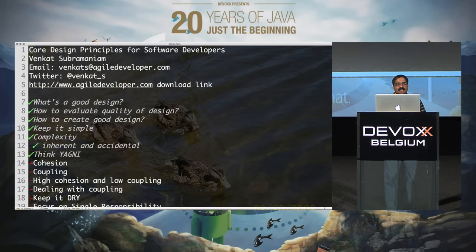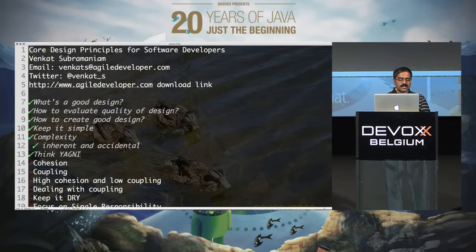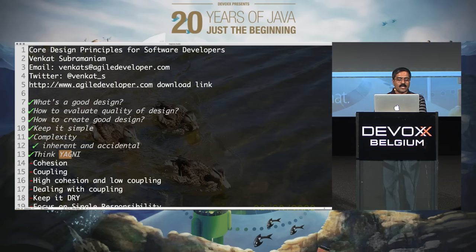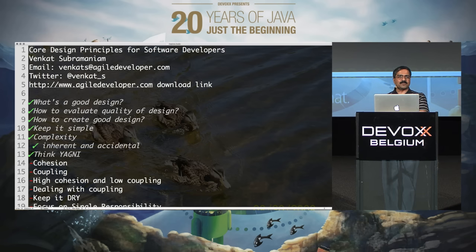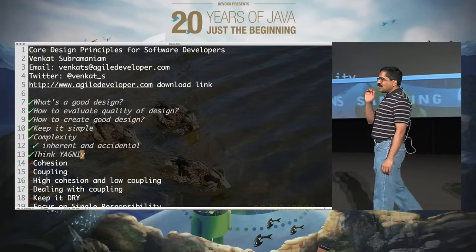One principle that can help us remove complexity is called YAGNI — You Aren't Going to Need It. When I talk to programmers and say you're not going to need it, they get upset. So I add a little Y at the end: you're not going to need it yet. They're so happy to hear that. But the point really is: you're not going to need it. Don't implement things you don't really need.